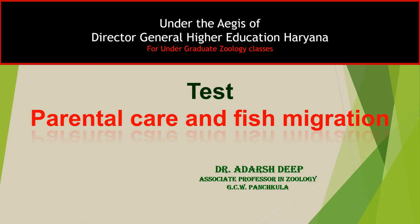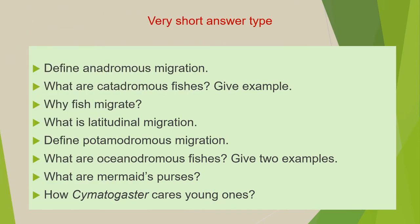Three types of questions may be framed from this chapter. The first category of questions are very short answer type questions which you have to answer in two to three lines. First question: define anadromous migration. Second: what are catadromous fishes? Give example.